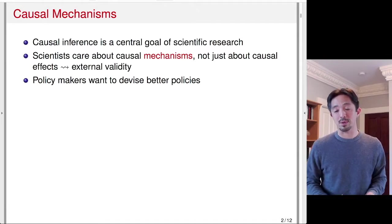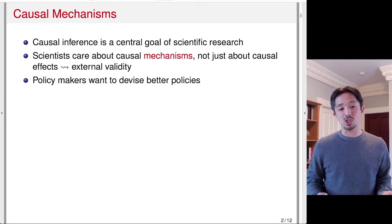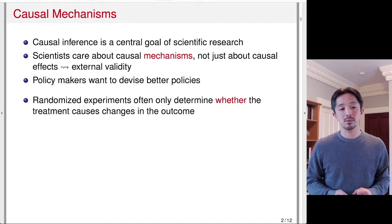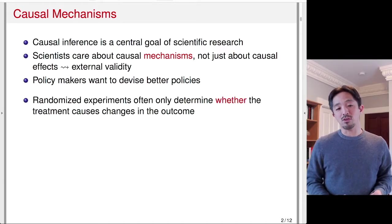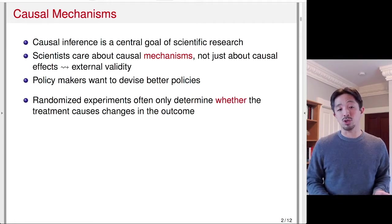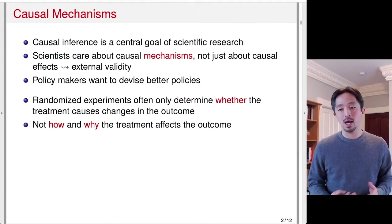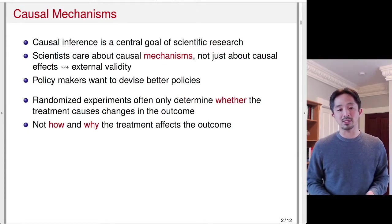If we know exactly what the mechanisms are, we can come up with alternative policies that are closer to such mechanisms. Randomized experiments, however, often only determine whether the treatment causes changes in the outcome, and don't really explain how and why such treatment effects might arise.